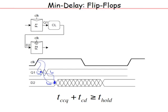A hold time violation is a very important problem to fix because, unlike a max delay violation where you can simply slow the clock, a hold time violation once fabricated is very difficult to correct. You might have to change temperature or use other environmental tricks after the chip comes back, but during design time you add buffers to slow down the offending path.